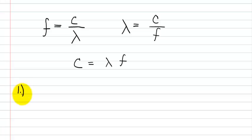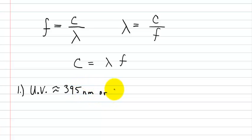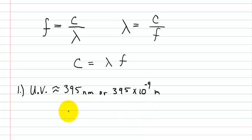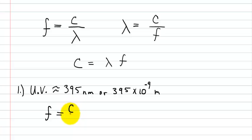Let's use these formulas. Let's say that we know the wavelength of ultraviolet light — UV light — is about 395 nanometers, or that's 395 times 10 to the negative 9 meters. What we want to find out is the frequency of ultraviolet light. In order to solve for that, we're going to use the formula: frequency is equal to the speed of light divided by the wavelength.